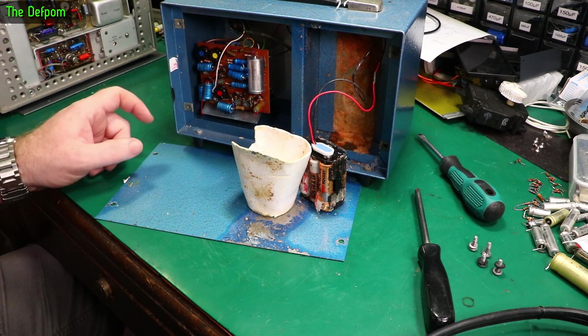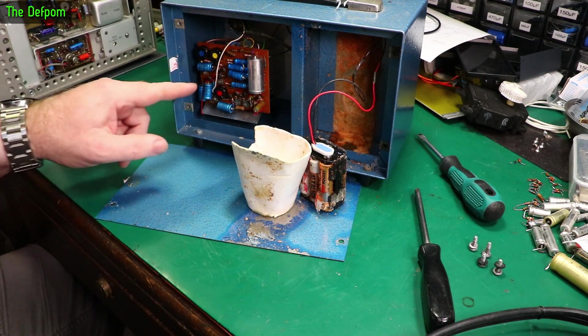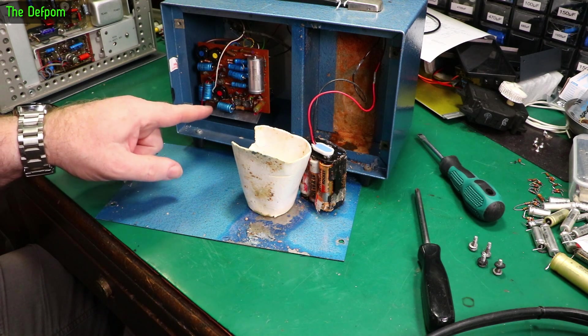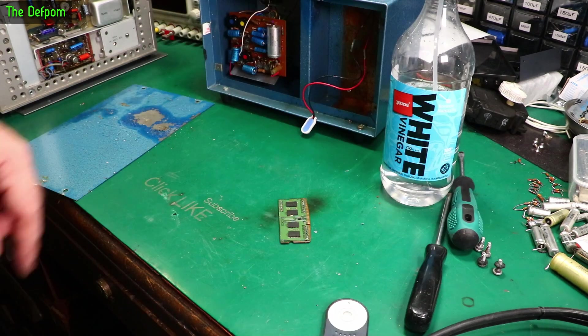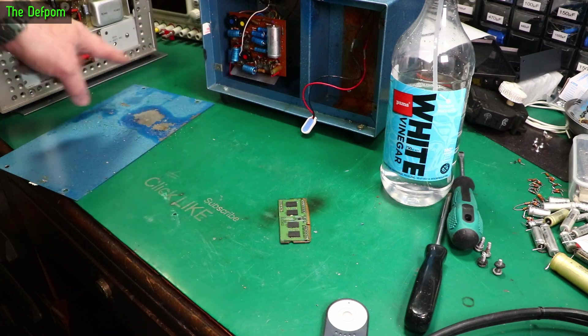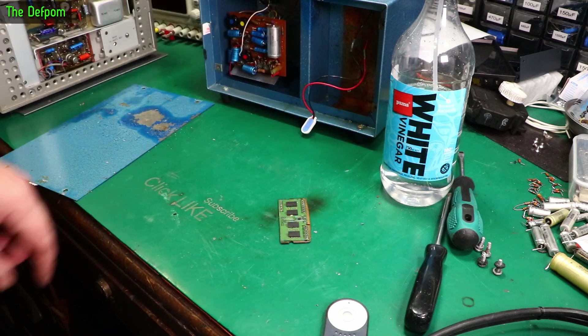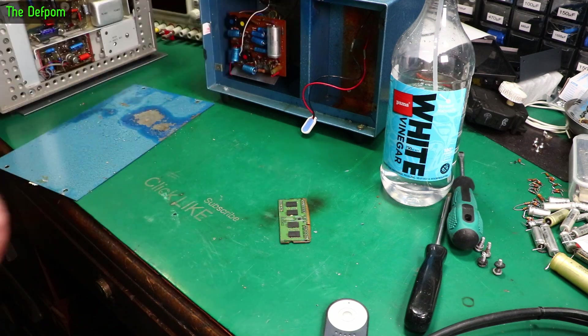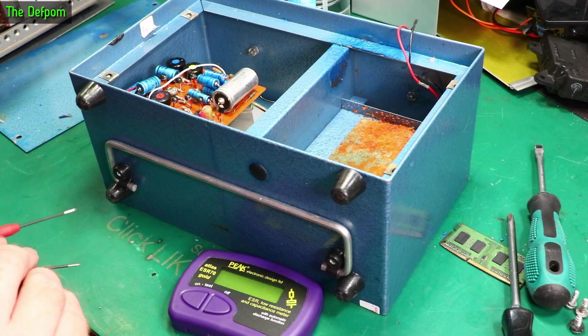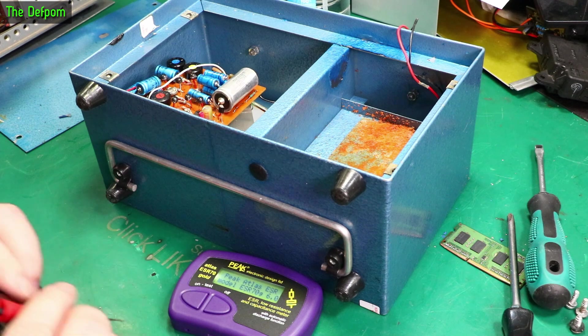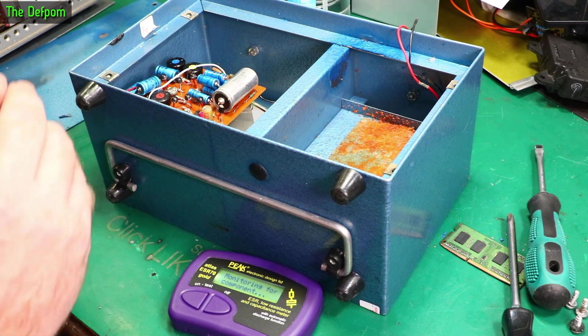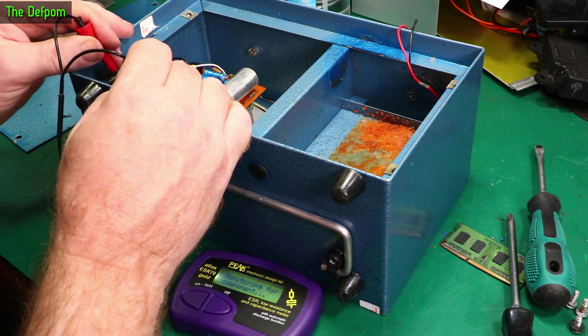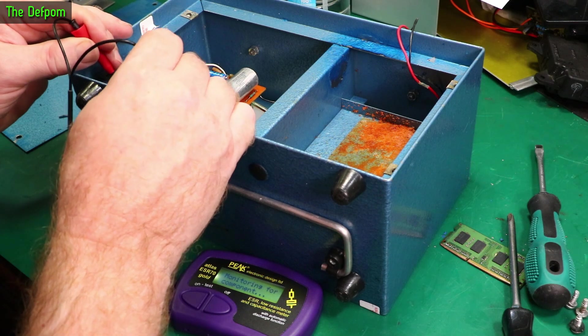Got some capacitors to check, not many but there's some and they're all Philips ones by the looks of it, so they're probably all bad. I just sprayed inside the battery compartment and back panel with white vinegar to neutralize the acid. Let's check these capacitors out very quickly.